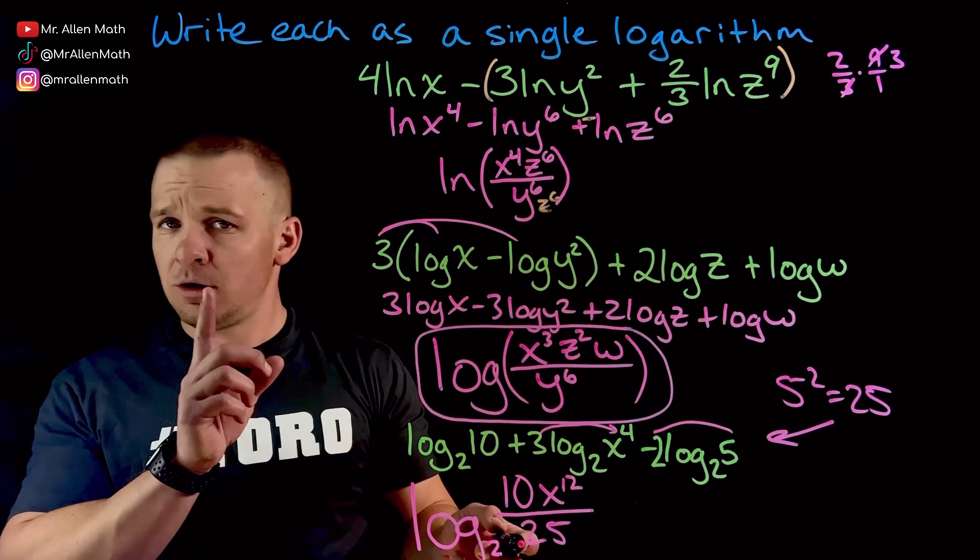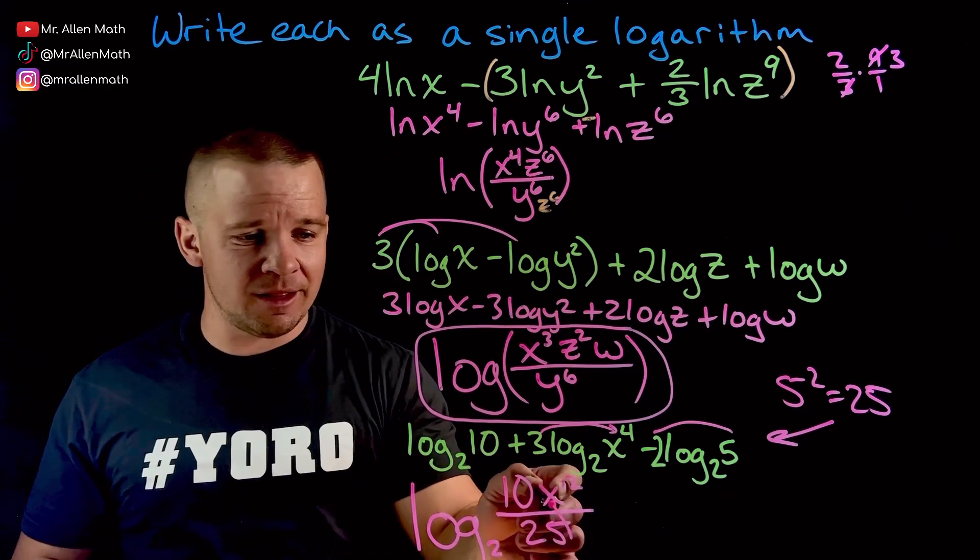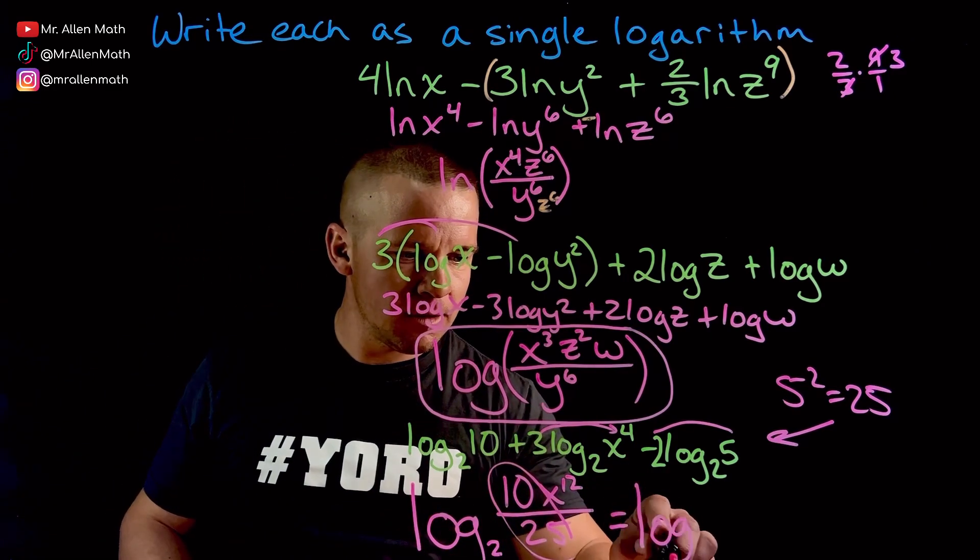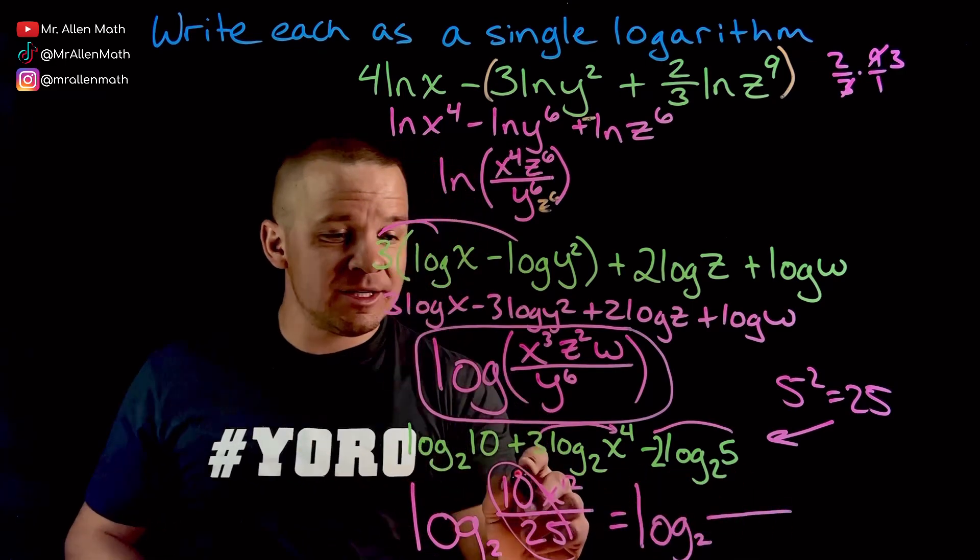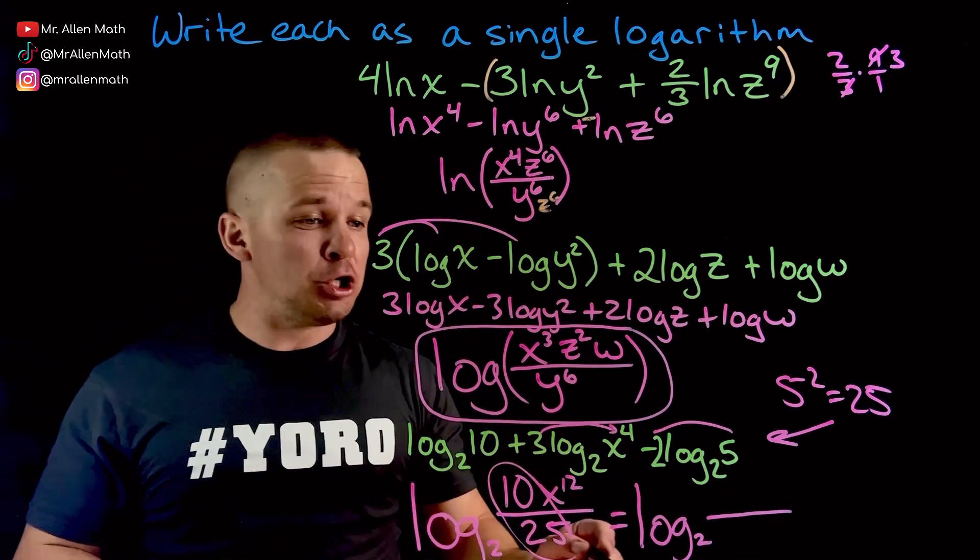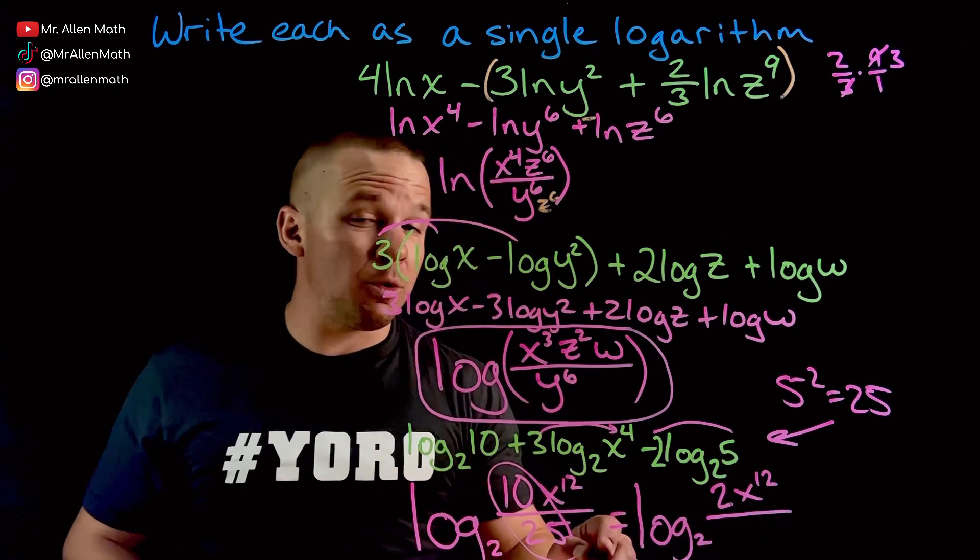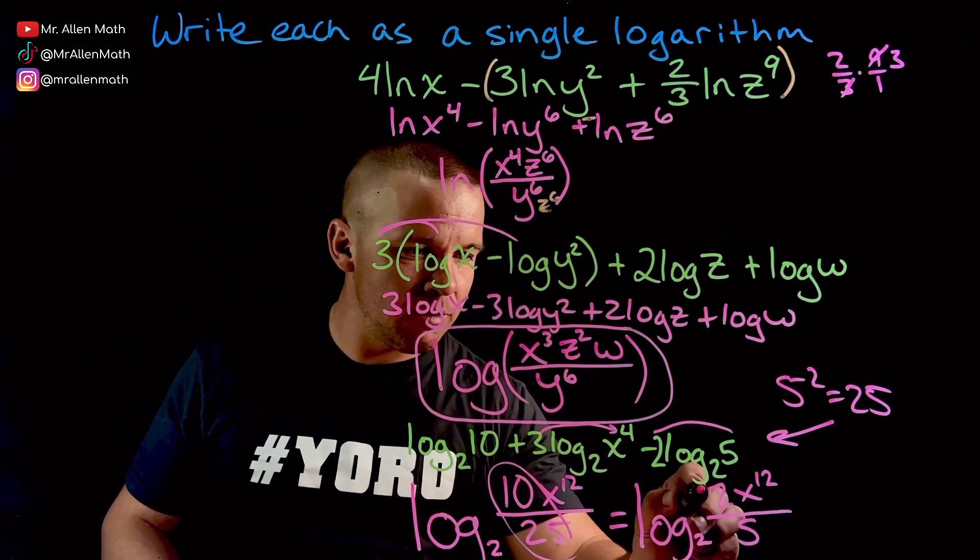Now, is that my final answer? No. I do want to simplify this 10 and 25 situation. So we're going to have a log base two of 10 and 25 are both divisible by five. That's going to be two left in the numerator. Two X to the 12th. When I divide 25 by five, I get five. Boom. Diggity. There we go.